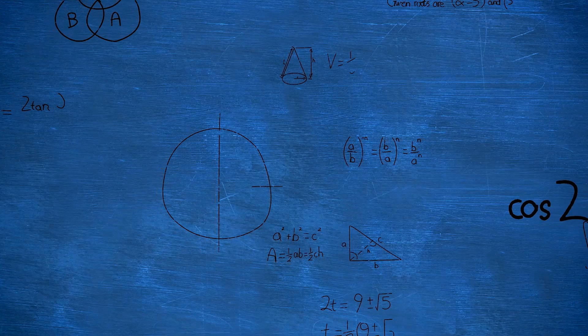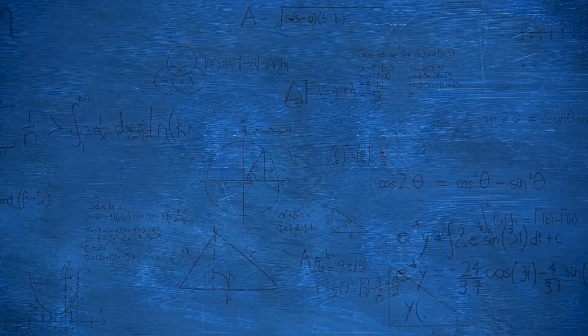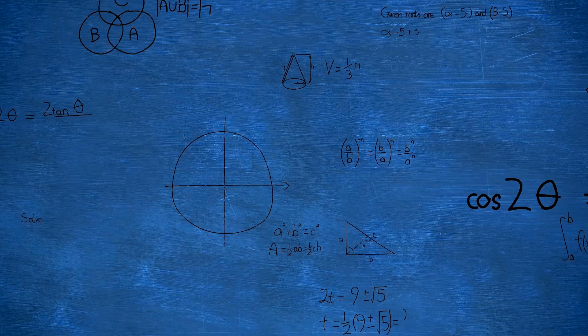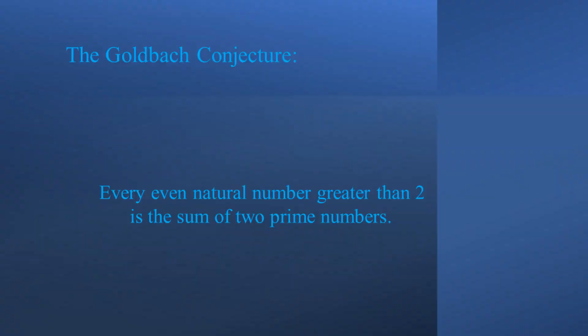What are the Landau problems? At the 1912 International Congress of Mathematicians, Edmund Landau listed four basic problems about prime numbers. He characterized these problems in his speech as being unattackable at the present state of mathematics. Those four unattackable unsolved problems became known as Landau's problems.